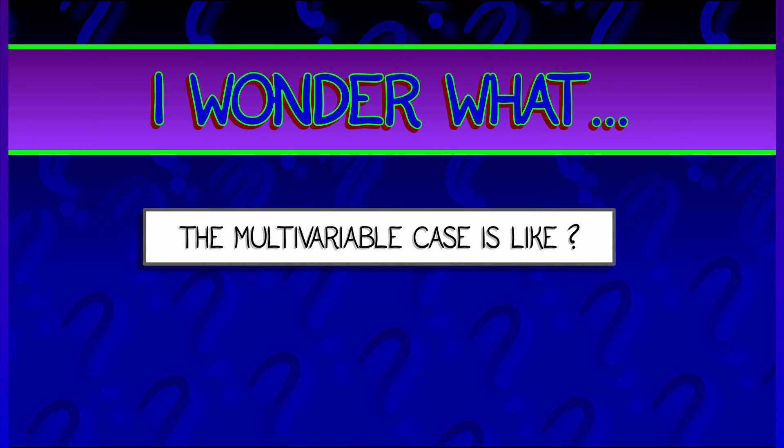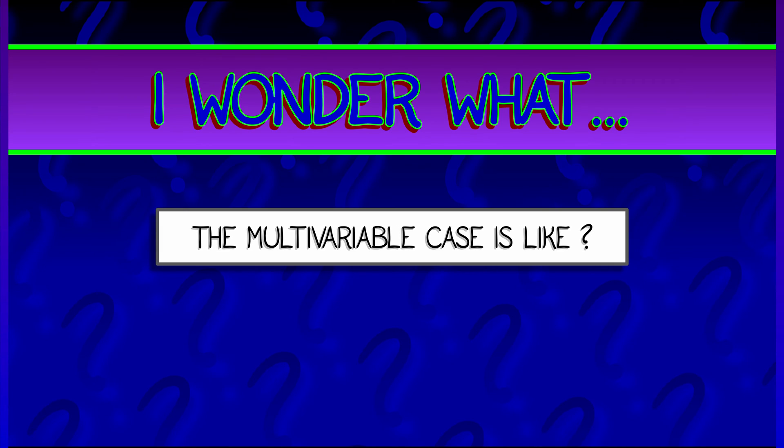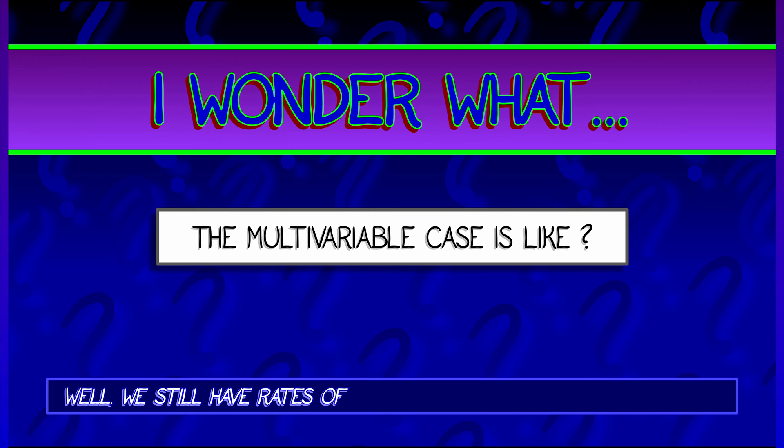I wonder what is the multivariable case of the chain rule like? Can we do this at all? We still have derivatives in terms of rates of change. We still know how to compose functions. I bet there's something we can do.